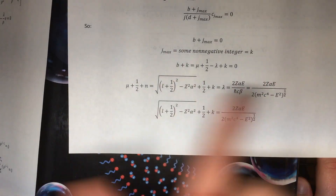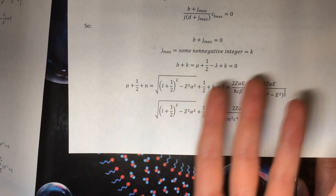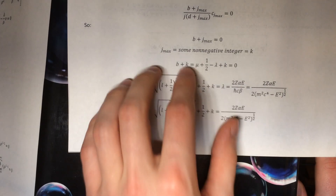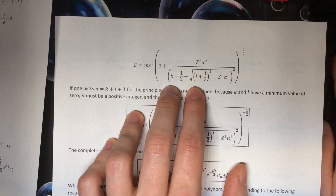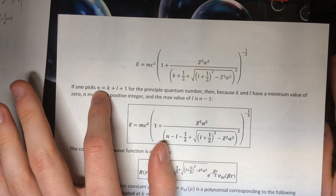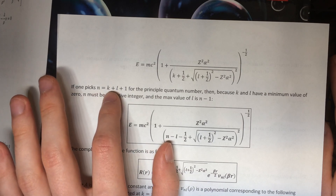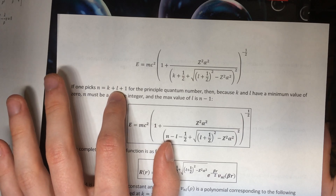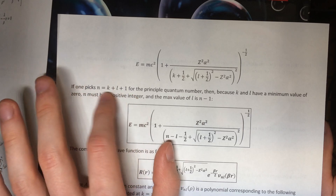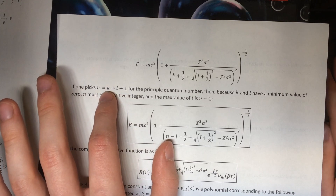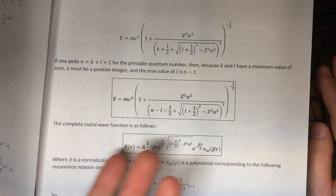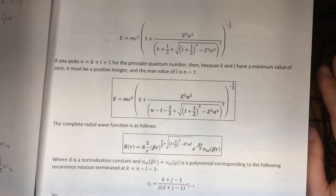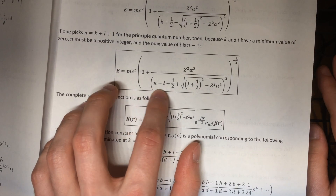Picking j_max to be some non-negative integer k — nothing less than zero because we can't terminate at a power less than zero since it didn't show up in our original power series — we plug in the value of b in terms of mu and lambda, then plug in mu and lambda, do some algebra, and we get an energy formula. Now if we pick the principal quantum number to be n, then because k has a lowest value of zero and the lowest value of l is zero, if we pick n equal to l plus k plus one then we get the restriction that l equals n minus one at the maximum. So that's how we write the energy formula in terms of the familiar quantum numbers n and l. This is kind of the big result.